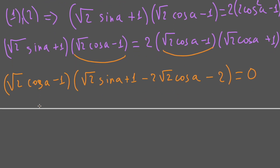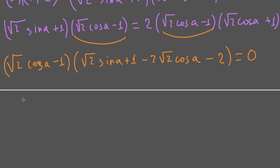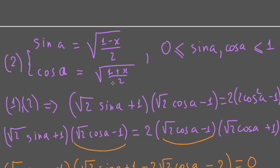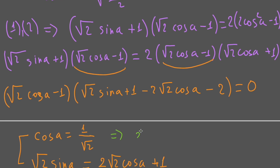So then we have two cases. The first case is sin a equal to 1 over the square root of 2. The second case is the square root of sin a equal to 2 times the square root of cos a plus 1. For the first case you can easily replace it back into the substitution, and x would be equal to 0.